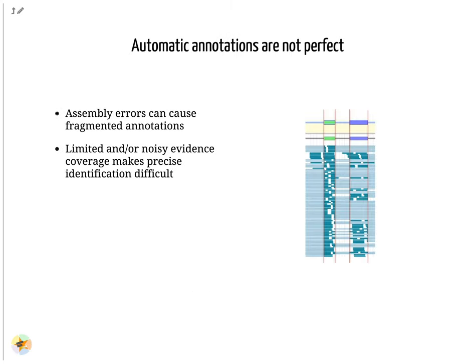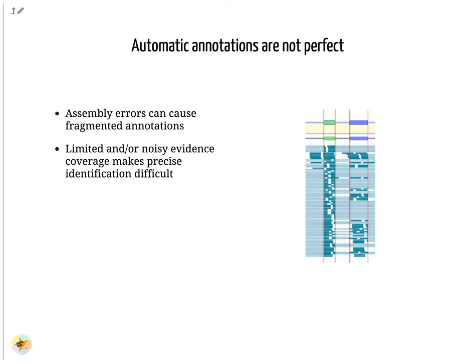Unfortunately, automatic annotations are rarely perfect. Assembly errors can cause fragmented annotations, and annotation tools have difficulties annotating genes when evidence like RNA-seq data is lacking or too noisy. Performing a manual curation step after automatic annotation allows improving annotation quality. It is a way to make use of a researcher's expertise and to integrate more knowledge to improve gene structures and functional annotation.